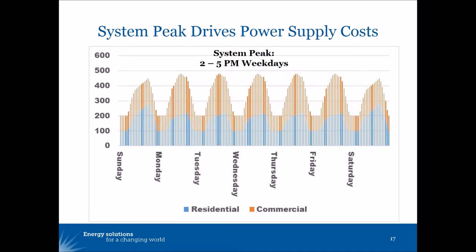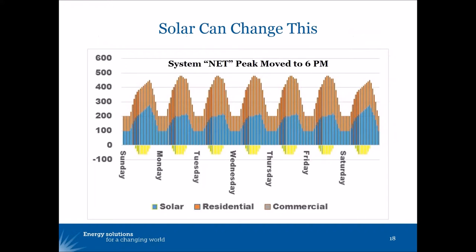So it includes the time when the commercial class peaks, but does not include the time when the residential class hits its peak. Solar can change this — if you start taking load off the system with solar, you tend to move the peak demand later in the day. In this case, the system net peak has moved from the 2 to 5 p.m. period into the 6 p.m. period.